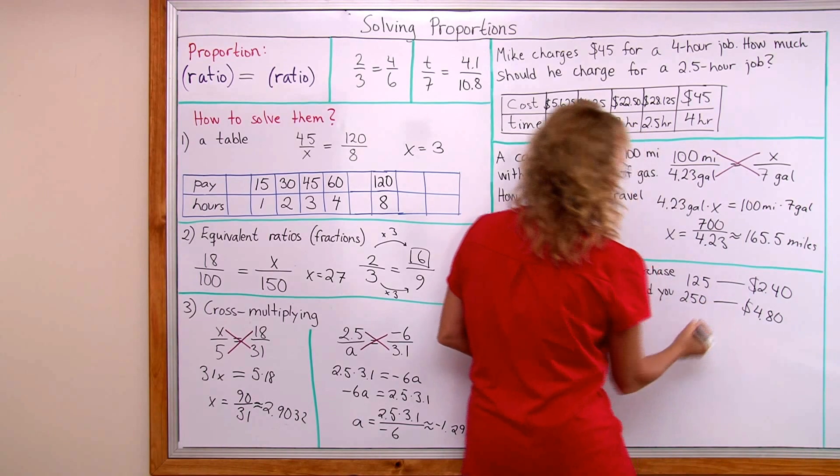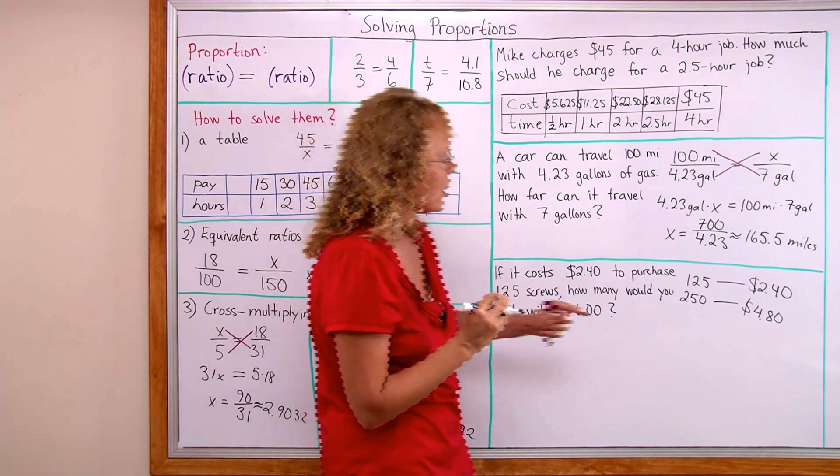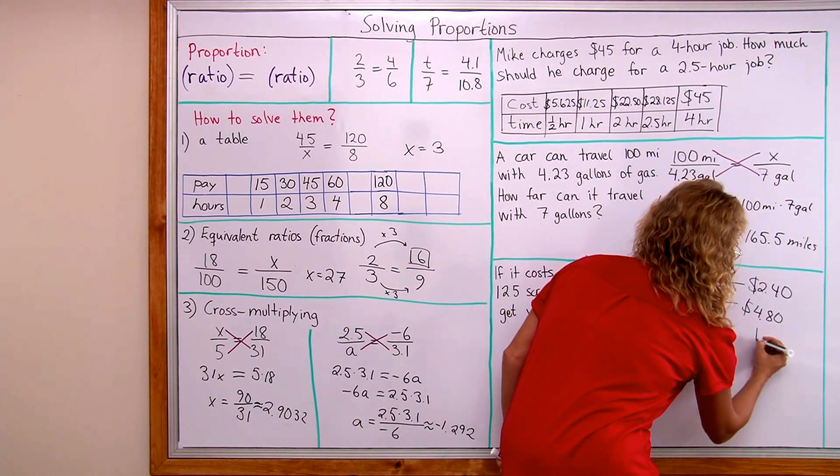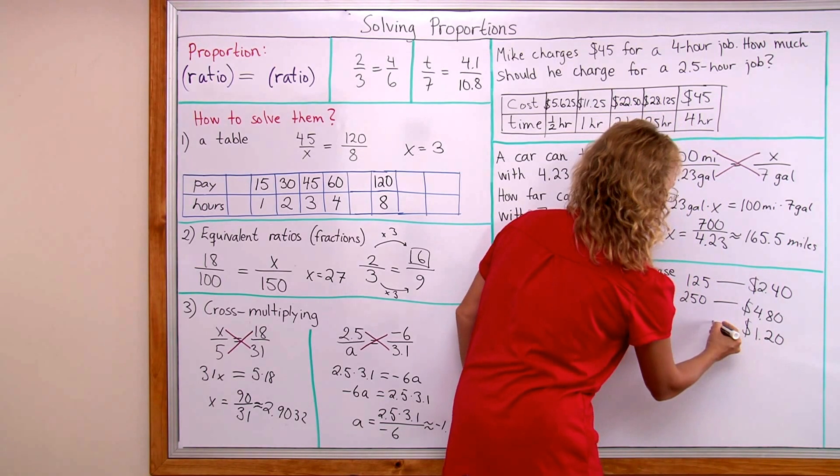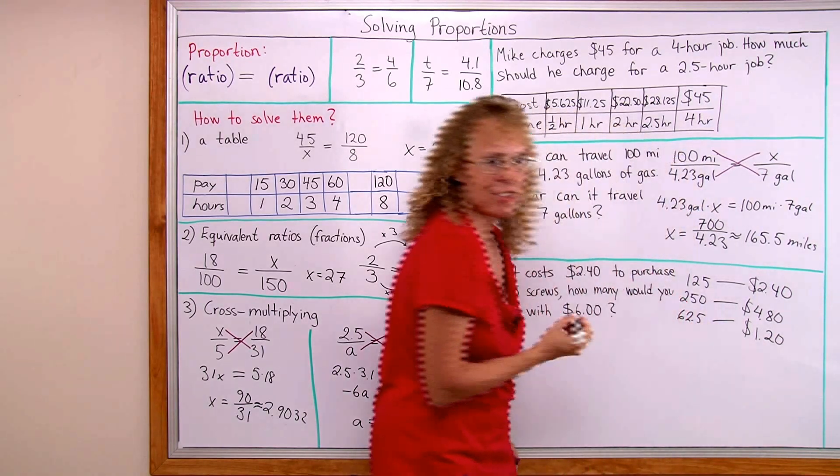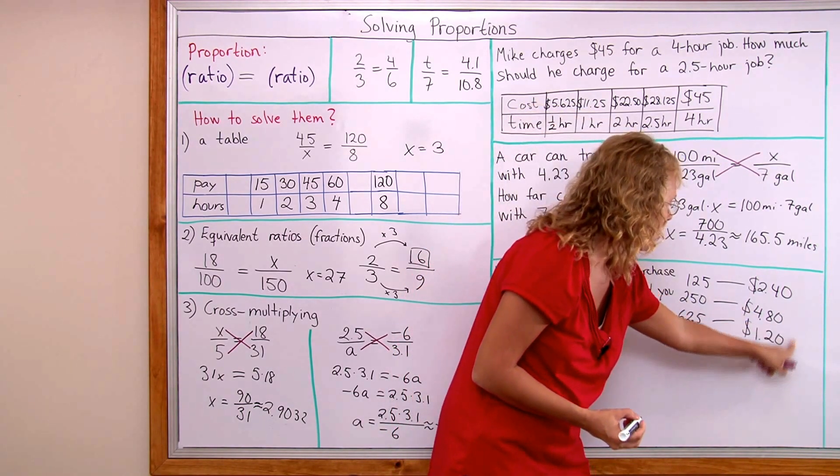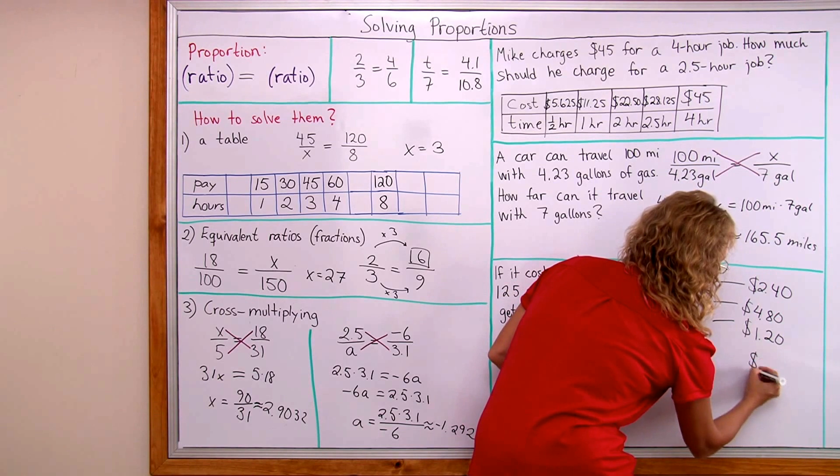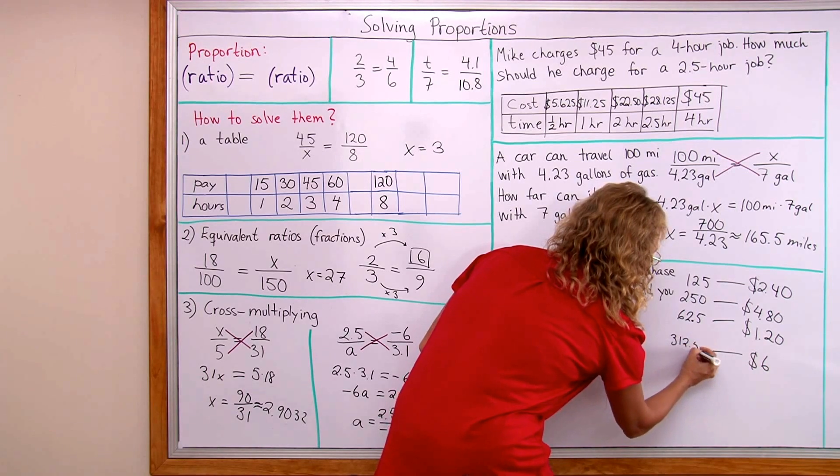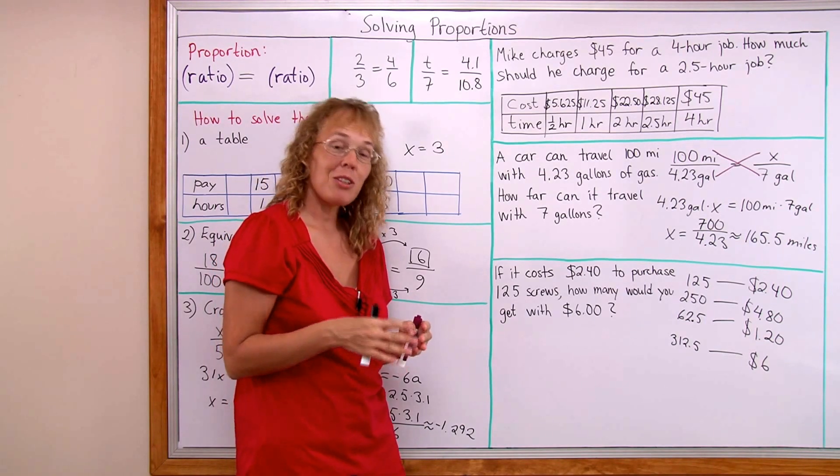That would be two hundred and fifty screws for four dollars eighty. But of course that's not six dollars. I need some smaller amount. If I add one dollar twenty to this then I would get six dollars, right? And that happens to be half of my original amount. So that will work beautifully. If I take half of this which is sixty two and a half screws. I know you can't get half of a screw but anyway. Let's keep it here for the calculation for now. And now I add these two last ones that I have to get six dollars here. And then add these two and we will get three hundred and twelve and a half screws. Which if you are the merchant you need to either round it to three hundred and twelve or three hundred thirteen screws.